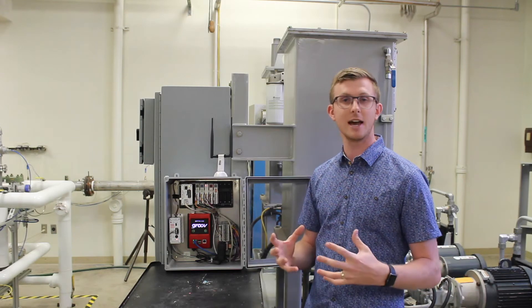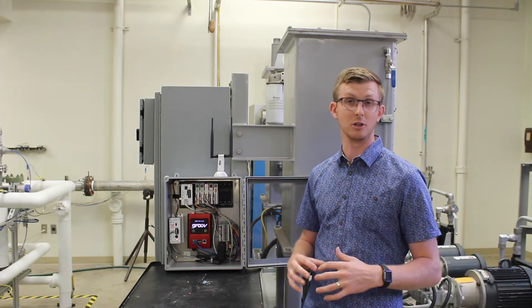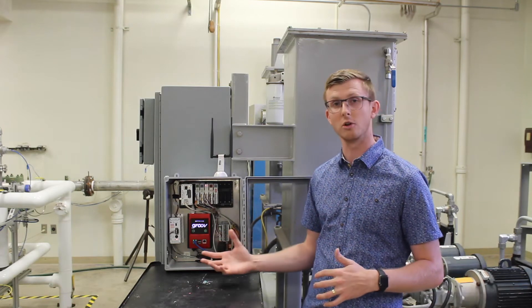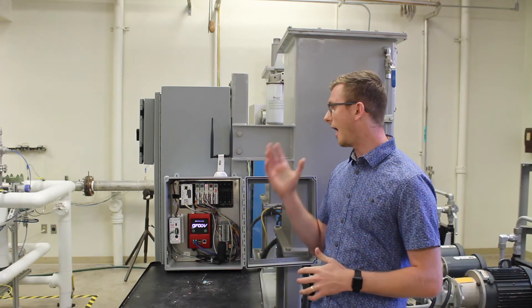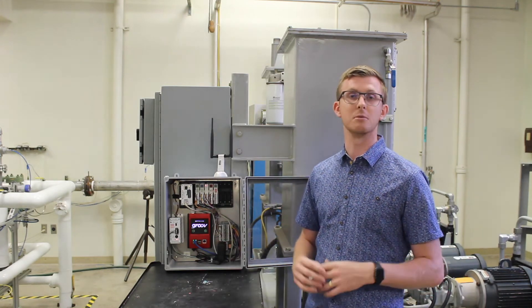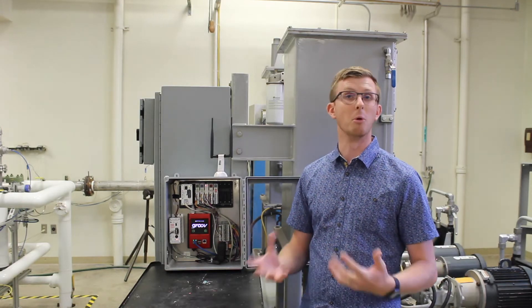This red box is called the Groov and this is our processing unit where we can do advanced control calculations and diagnostics here locally on the machine and it can regulate itself. And then we have the wireless control where we can send and receive information through a desktop or mobile application.